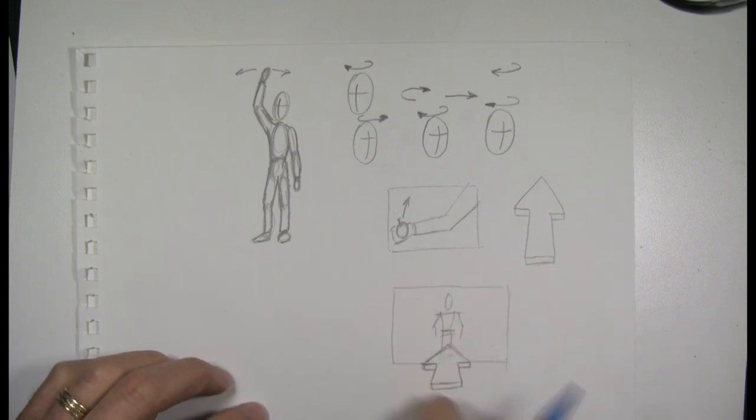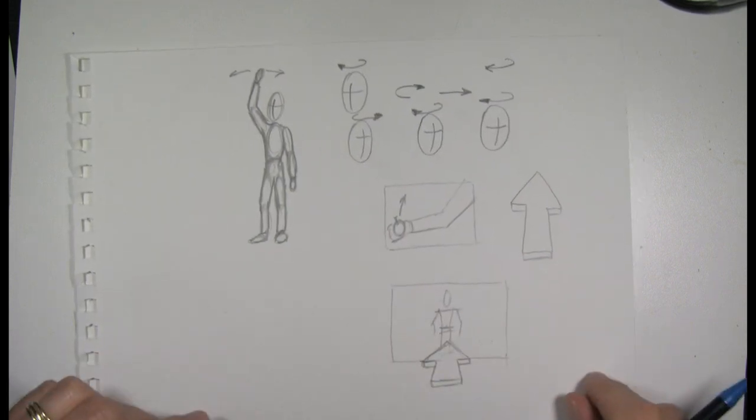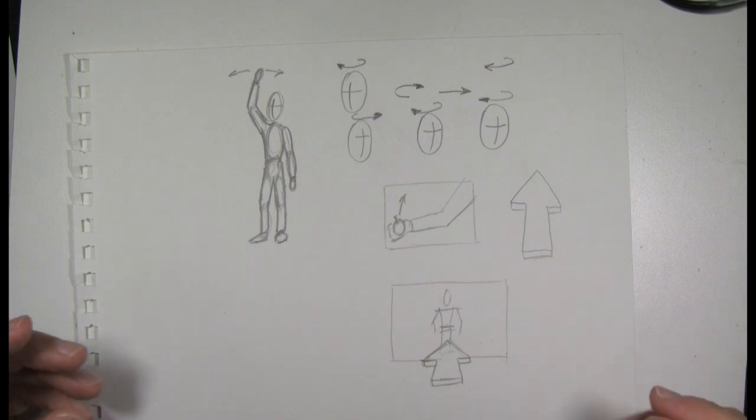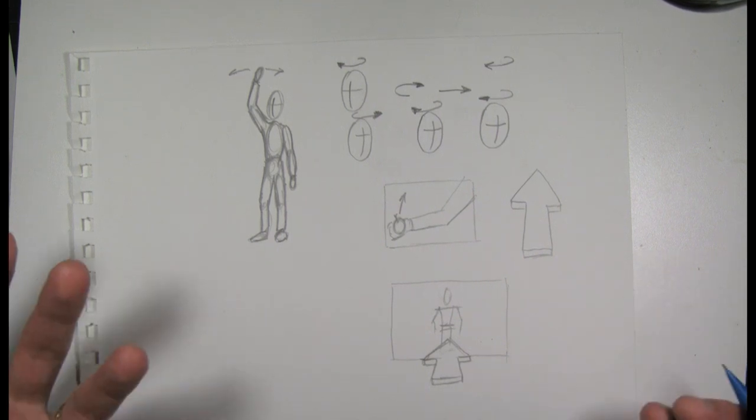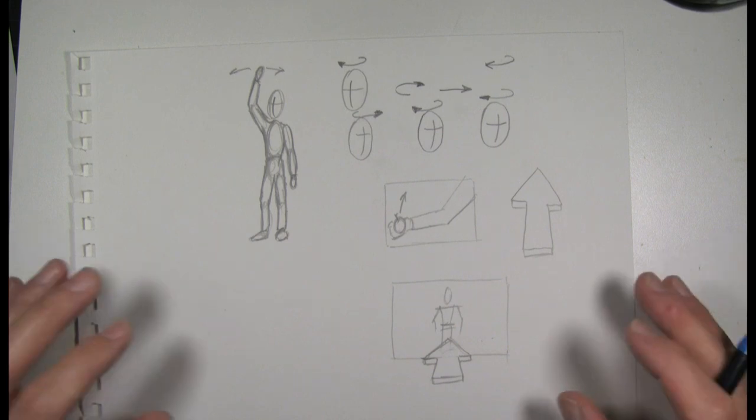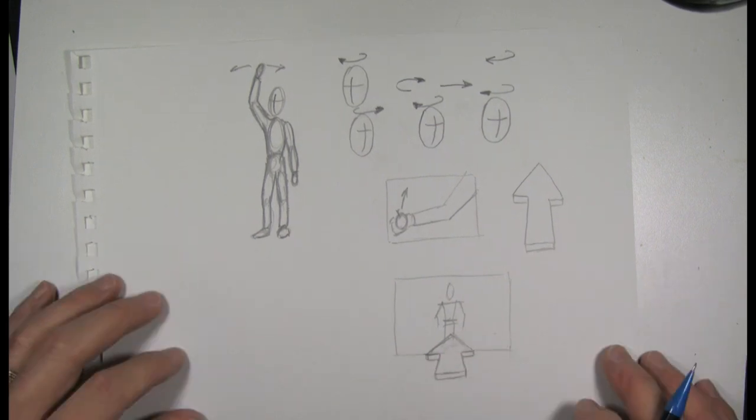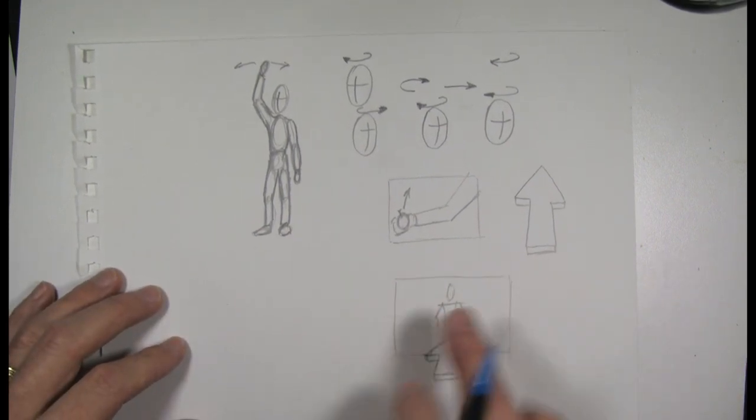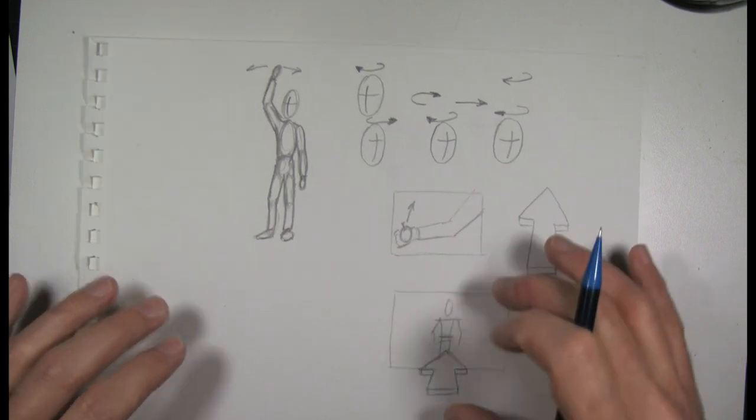Now my arrow is outside of the box, and that can be problematic when you're working with a program like Storyboarder or creating an animatic or something. Now in an animatic, we would go ahead and animate that. So you might just say, well, it's fine if it gets clipped off. But if you want to keep the arrow in the frame, then I'm just going to redraw that.